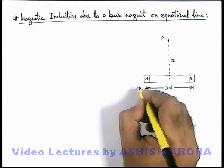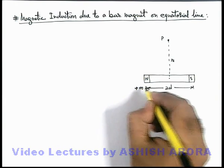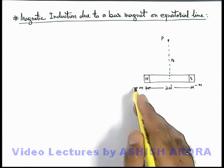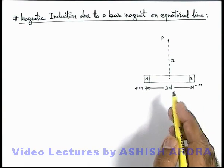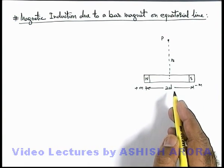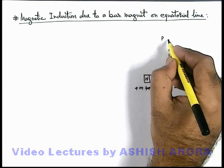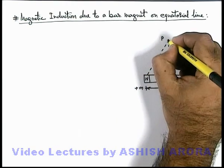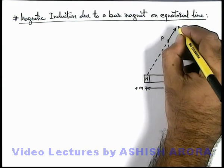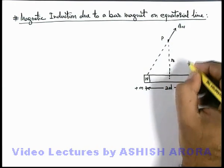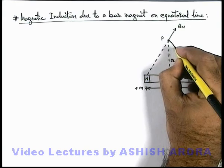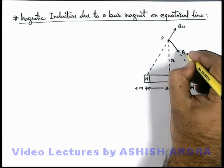Here if the pole strengths of the magnet are considered as plus m and minus m, equal in magnitude but opposite in nature, and we wish to find the magnetic induction at point P, we know due to the north pole the magnetic induction is away from it which is B_N, and due to the south pole the direction is toward the pole which is B_S.